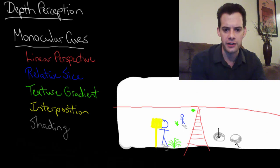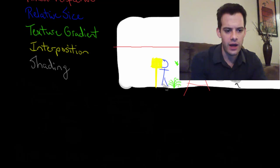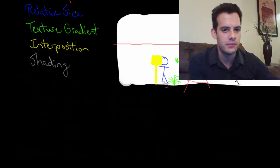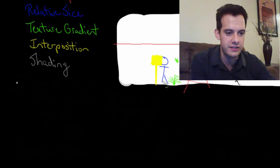So those are all of the monocular cues. There's a couple other cues. Actually these next two are also monocular, but these involve motion. These are motion-based cues.